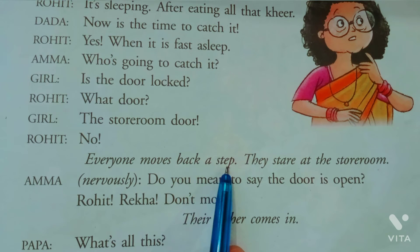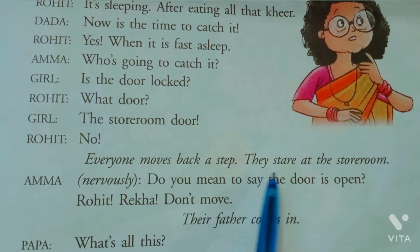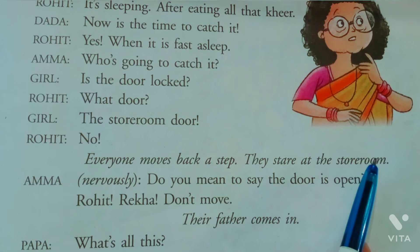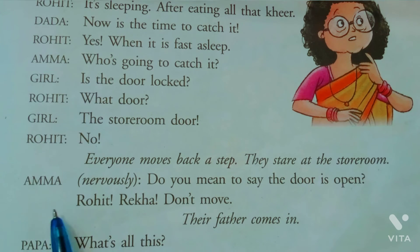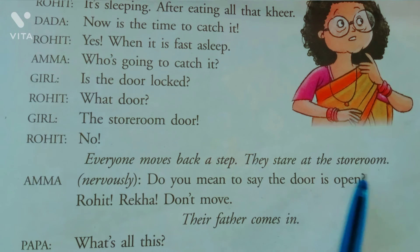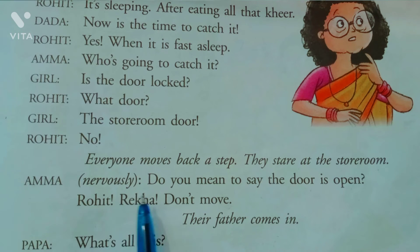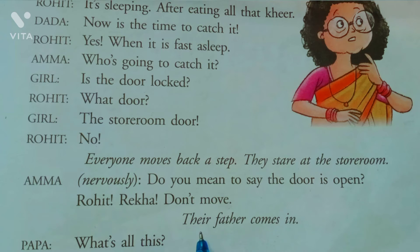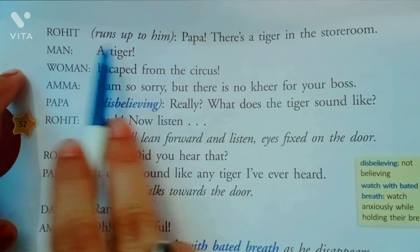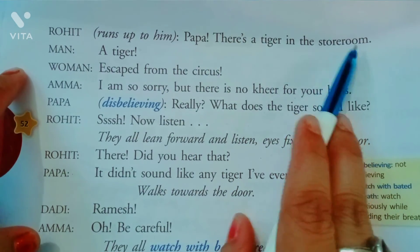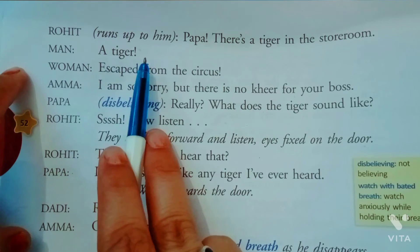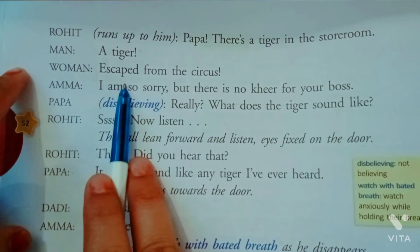Everyone moves back a step — sab ke sab peeche ko ek kadam lete hain. They stare at the storeroom. Amma nervously boli 'Do you mean to say the door is open?' Rohit bolta hai 'Rekha, don't move.' Their father comes in — 'What is all this?' Rohit bolta hai 'Papa, there is a tiger in the storeroom!'